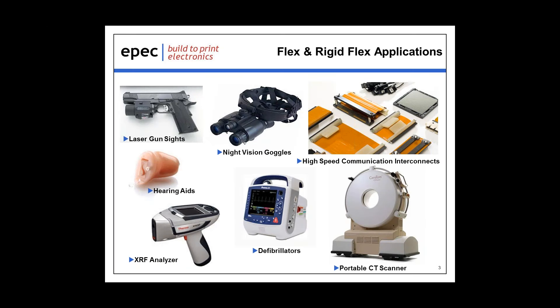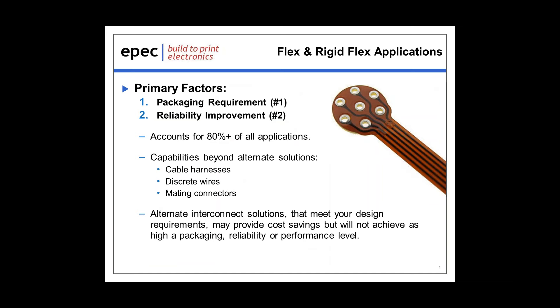Given the size of the marketplace — examples on screen now include laser gun sights, night vision goggles, and defibrillators — it's a very broad spectrum. The most relevant conversation is to identify and understand the primary factors as to why a flex or rigid flex would be applied to a given design requirement. The number one requirement, accounting for the majority, is packaging — attempting to fit, for example, ten pounds of product in a five pound box. The second most common is reliability improvement. Between these two, they account for approximately 80% of all applications encountered.